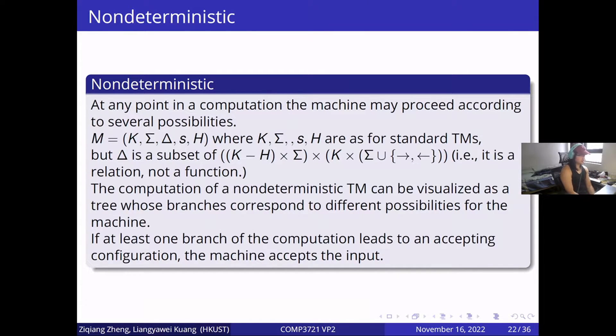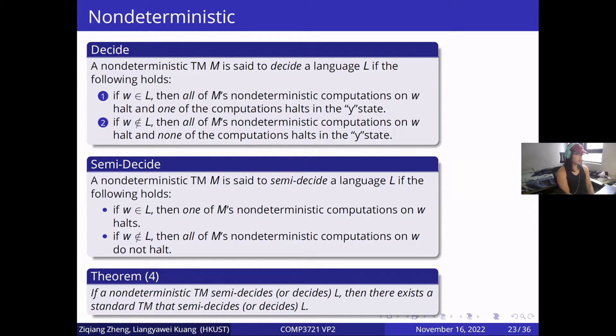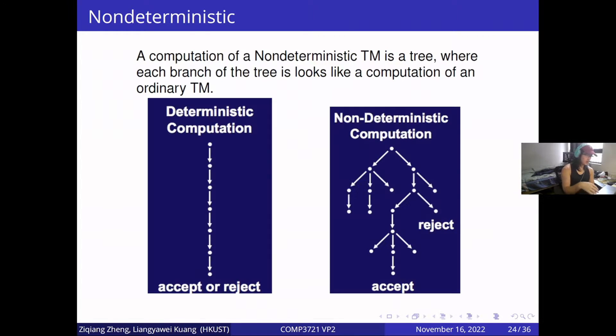For non-deterministic, the machine may proceed according to several possibilities at any point in a computation. There are decided cases and semi-decided cases in non-deterministic settings. If a non-deterministic Turing machine semi-decides or decides L, then there exists a standard Turing machine that semi-decides or decides L. The computation of non-deterministic is a tree, where each branch of the tree looks like a computation of an ordinary Turing machine.